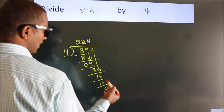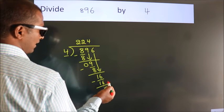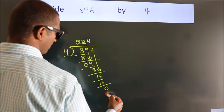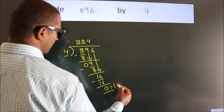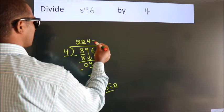After this, no more numbers to bring down, so we stop here. This is our remainder. This is our quotient.